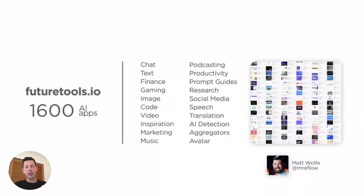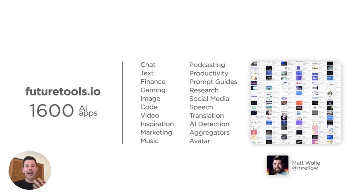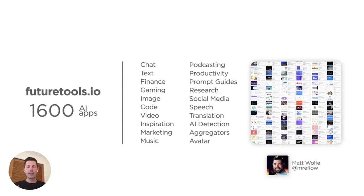That answer came from a YouTuber named Matt Wolf. His site is called FutureTools.io — it has 1,600 different AI apps covering everything from chatting to text, coding, speech, and generative AI for images. It's a really great way to have all the tools on hand, and it has all the news being generated about AI. It's probably the most in-depth site right now.